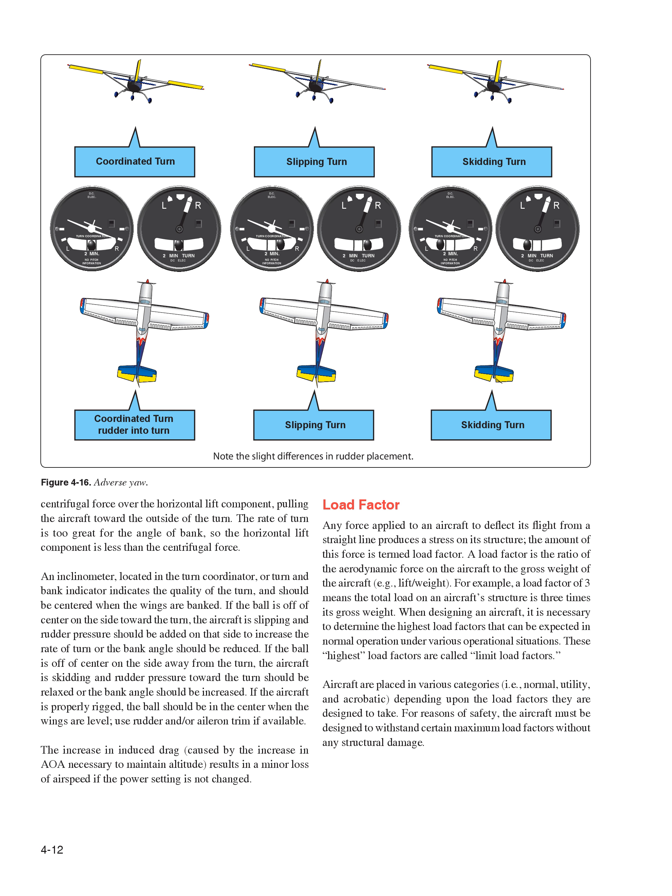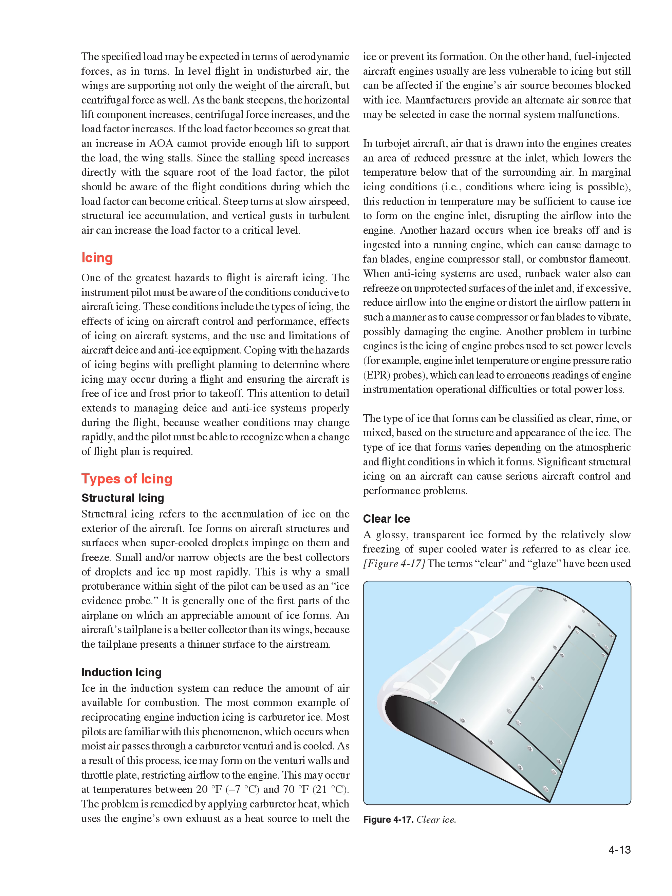For reasons of safety, the aircraft must be designed to withstand certain maximum load factors without any structural damage. In level flight and undisturbed air, the wings are supporting not only the weight of the aircraft, but centrifugal force as well. As the bank steepens, the horizontal lift component increases, centrifugal force increases, and the load factor increases. If the load factor becomes so great that an increase in AOA cannot provide enough lift to support the load, the wing stalls. Since the stalling speed increases directly with the square root of the load factor, steep turns at slow airspeed, structural ice accumulation, and vertical gusts in turbulent air can increase the load factor to a critical level.